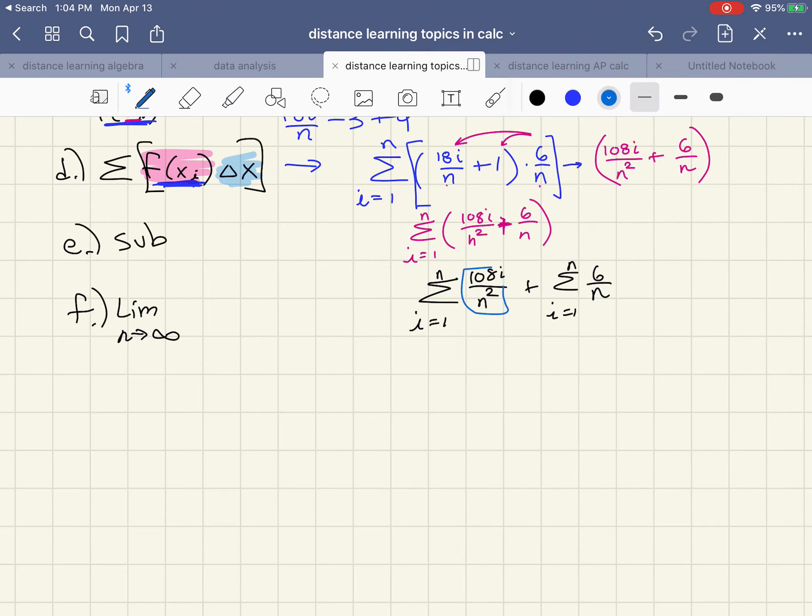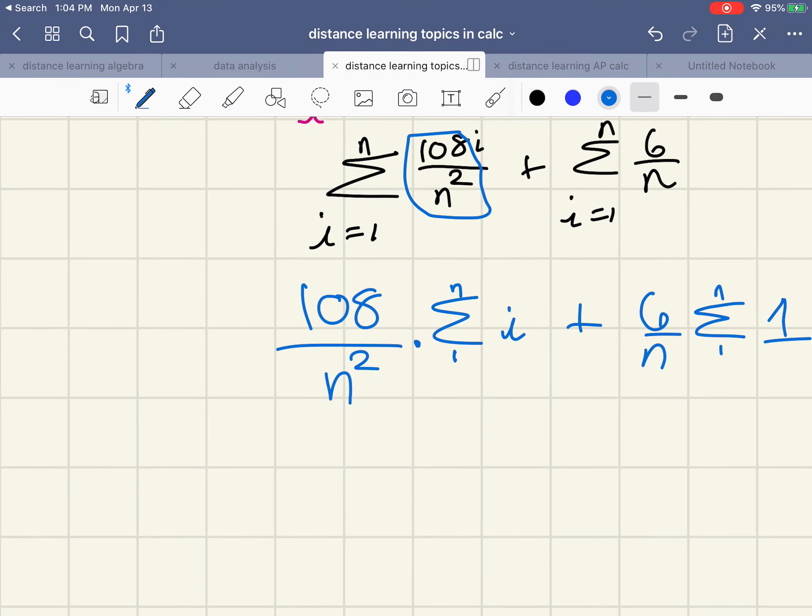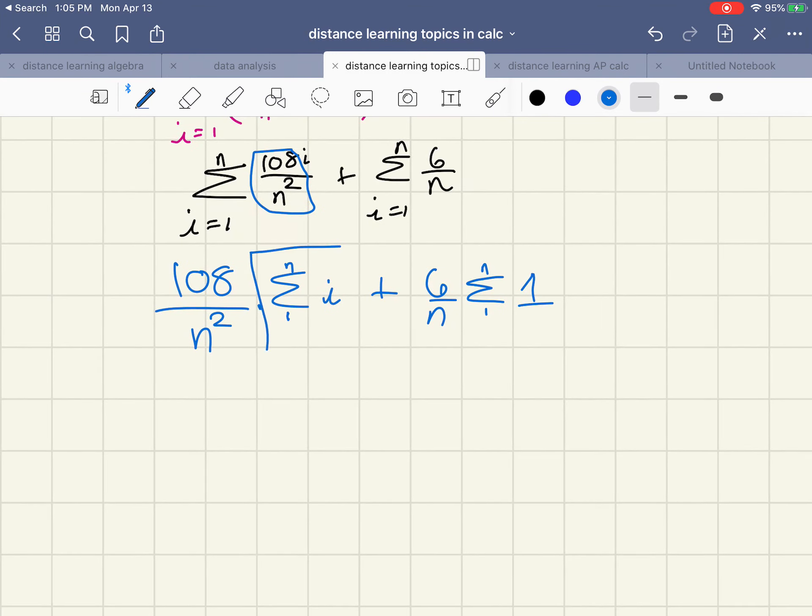First one 108i over n squared plus second one also from one to n of six over n. I need to now substitute so I'm going to factor out everything that's not an i from the first one, 108 over n squared here times sigma i, I'm just going to do a shortcut there, plus take out the six over n leaving just sigma of one. Again this is starting at one and ending at n, starting at one and ending at n, just a little bit informal there.